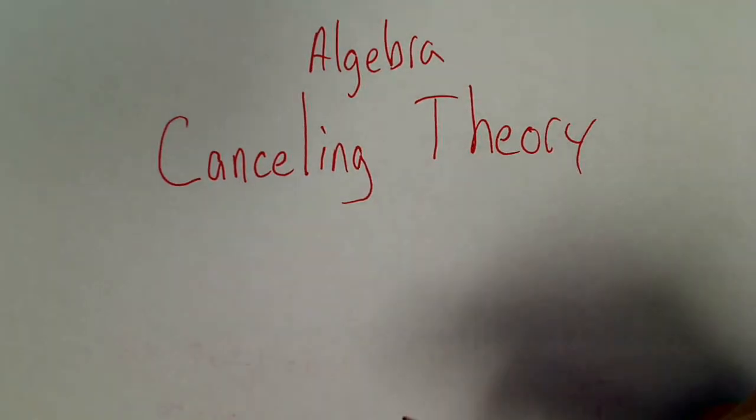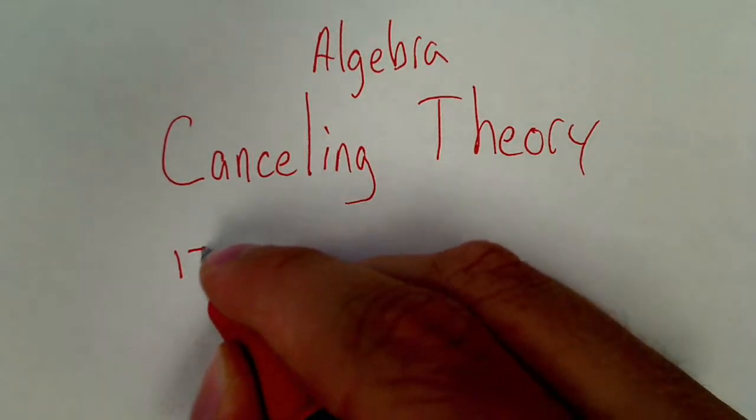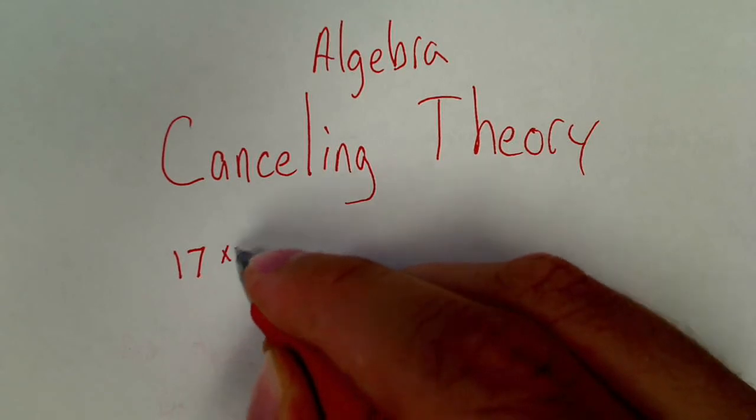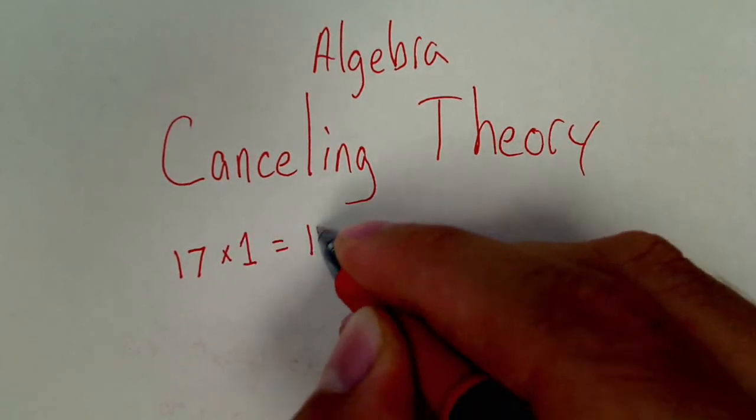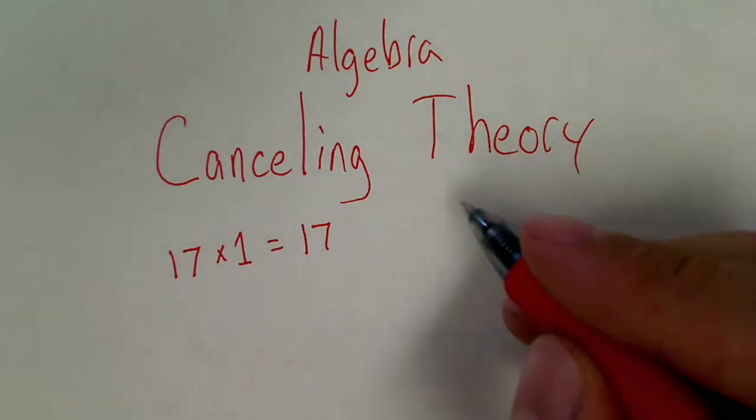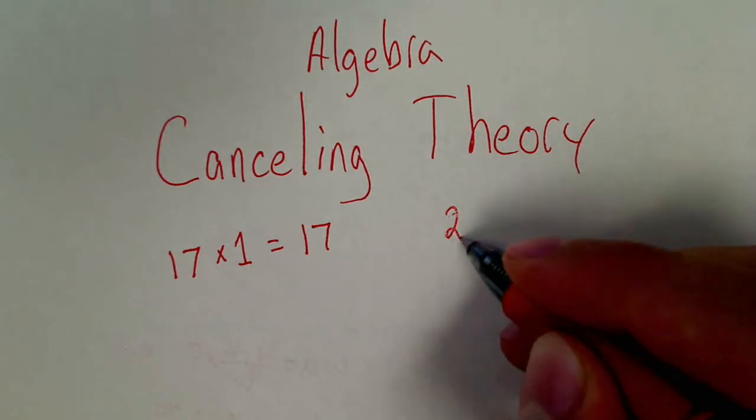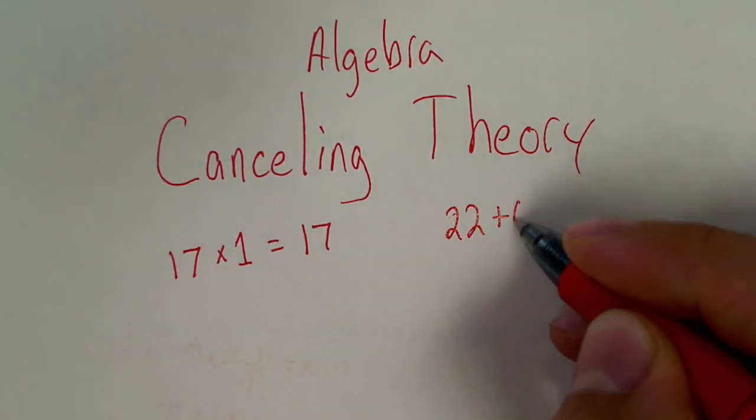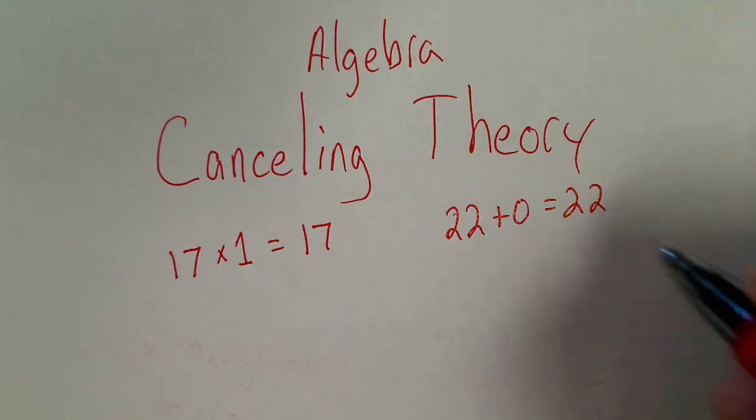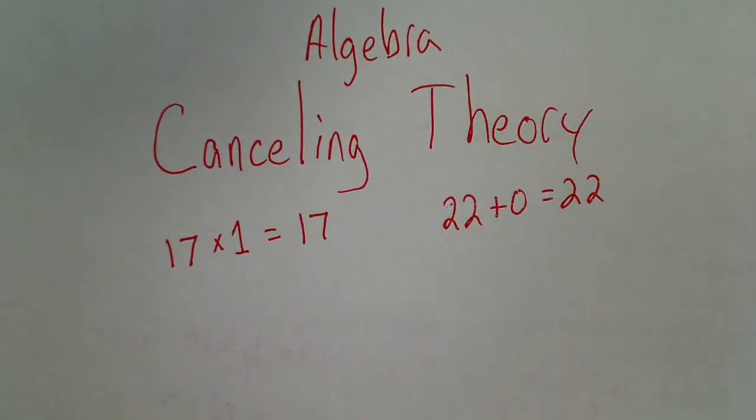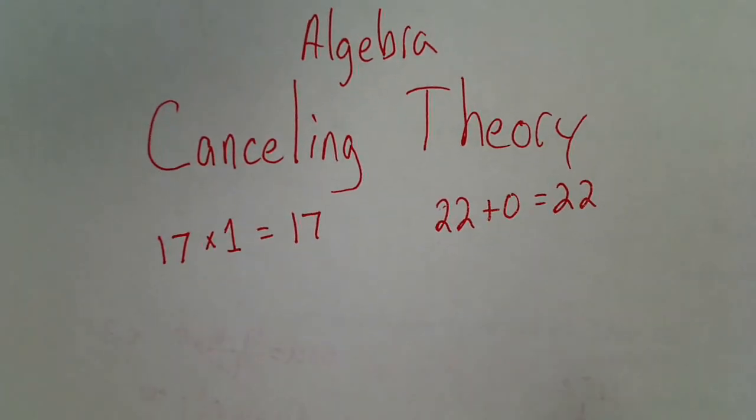So I think everyone recognizes if I have 17 and I multiply by 1, that is just 17. Likewise, if I take 22 and I add 0, that is just 22. These two tricks are huge. We exploit them, we'll use them over and over in algebra.